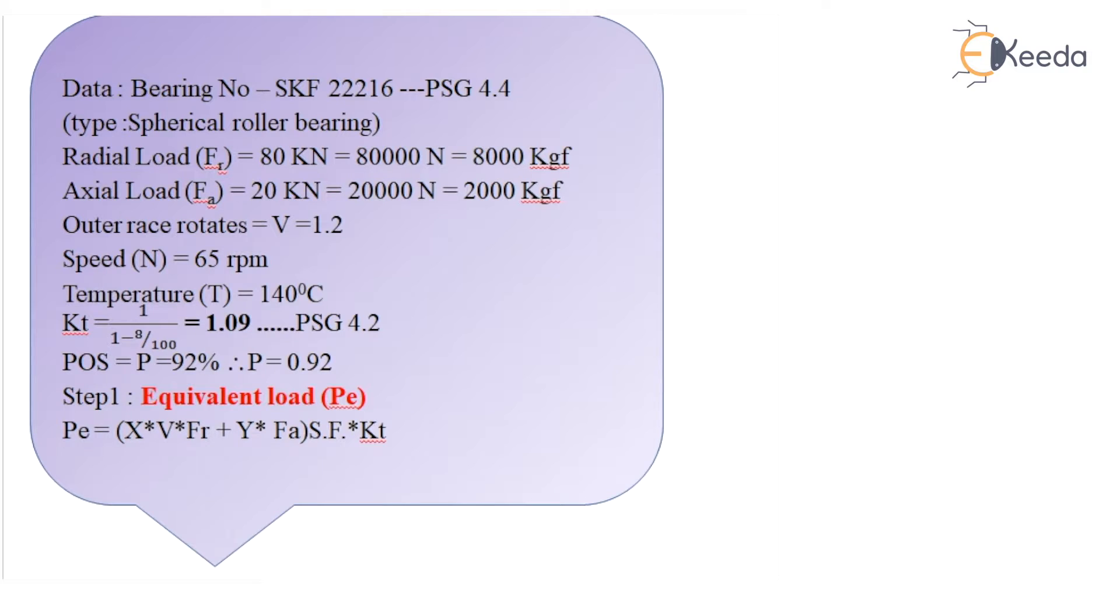Considering outer race rotating, so V is equal to 1.2. Speed is given as 65 rpm. Temperature is given as 140°C. So from PSG we can find out the temperature factor KT as 1/(1-8/100), so I get the value of KT as 1.09. Probability of survival is given as 92%, so PE is equal to 0.92.